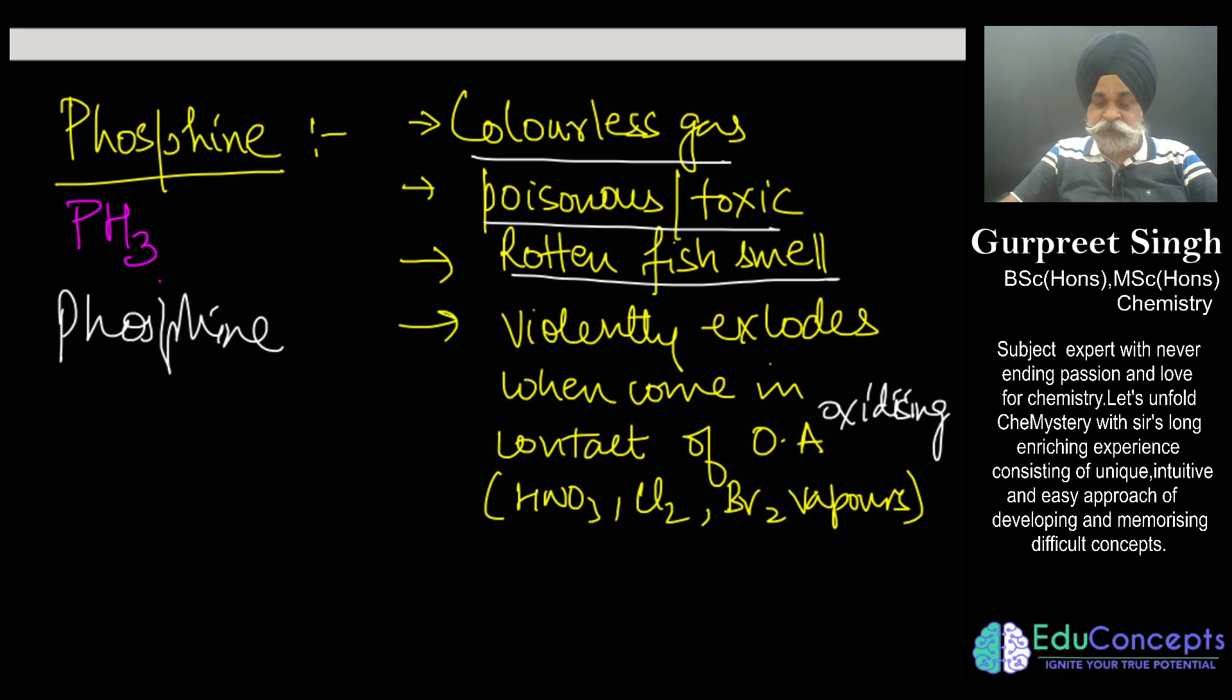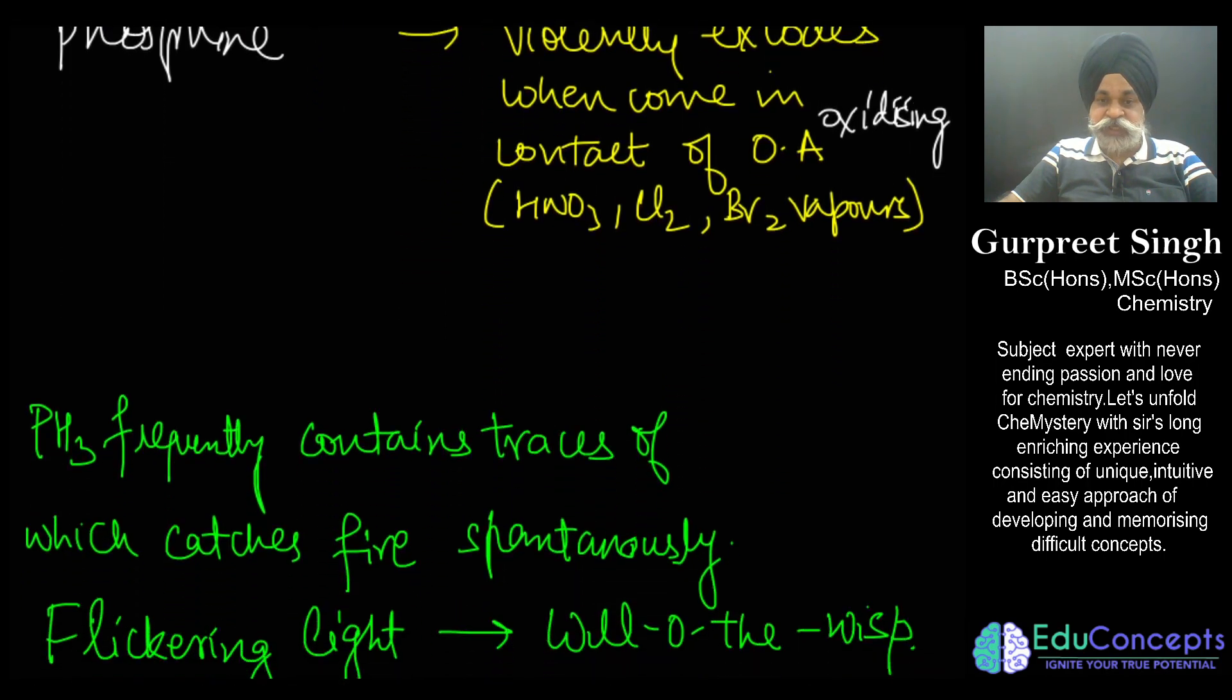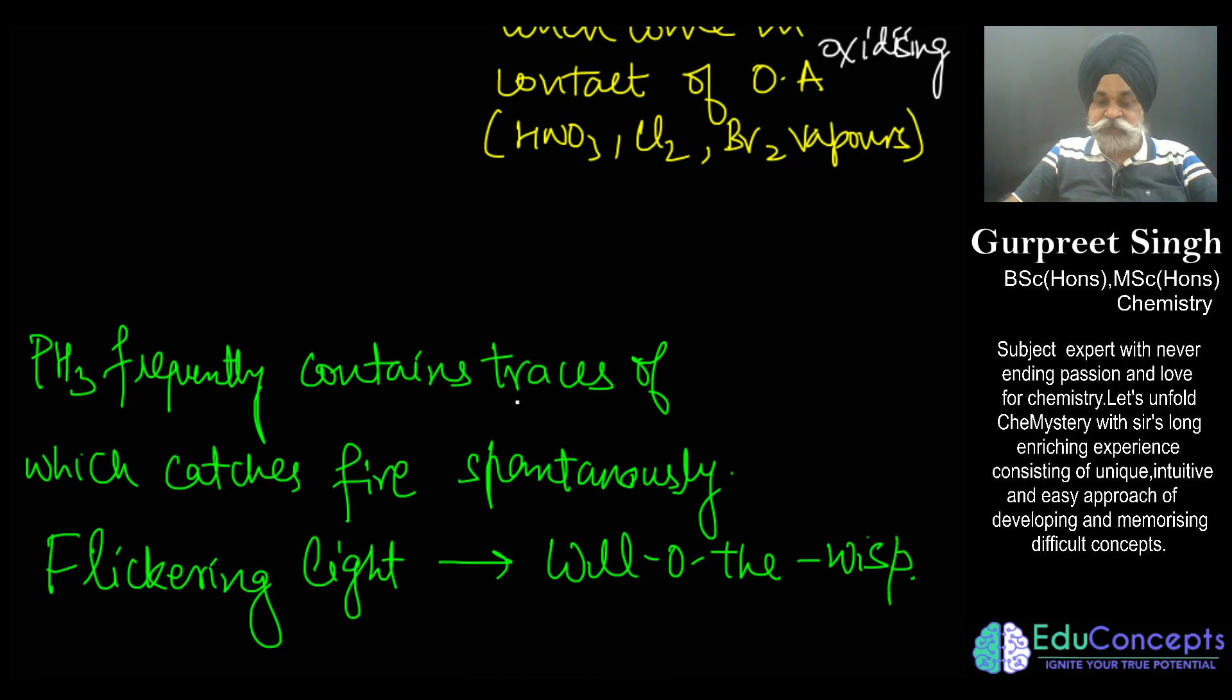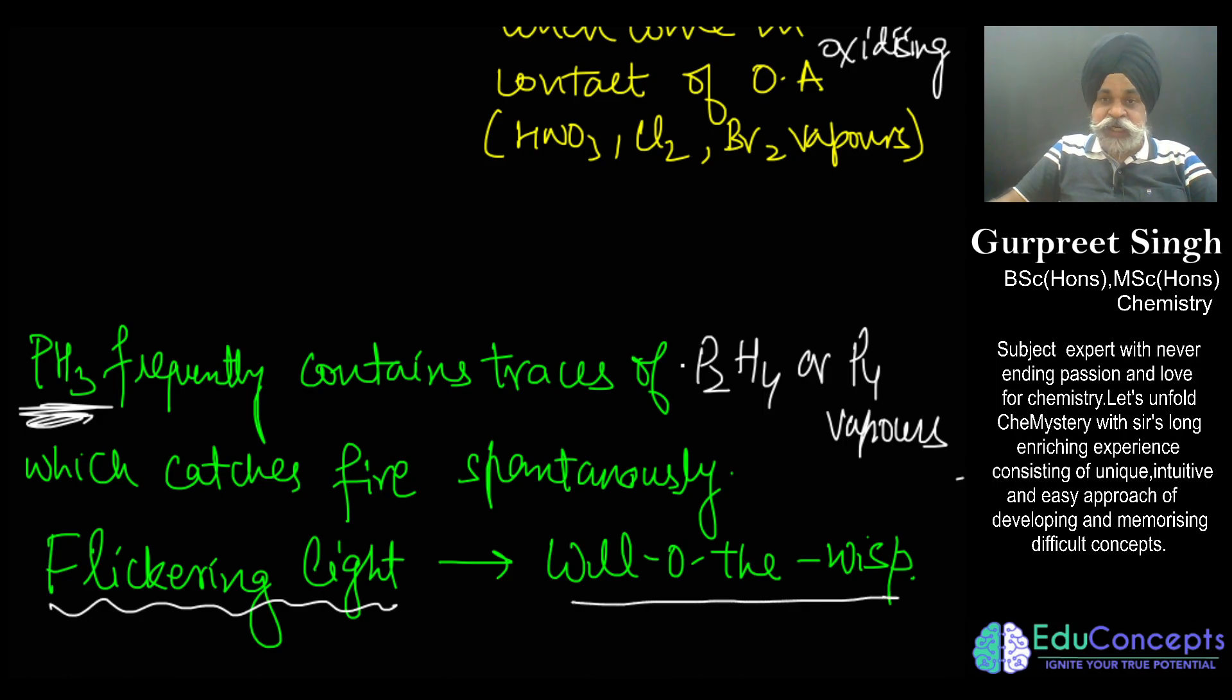The other part of phosphine is that it has a unique property that when it is exposed in air, it can spontaneously catch fire due to the presence of some impurities of P₂H₄, or at times it also would contain some vapors of phosphorus. This phosphine catches fire because of that fact, and this flickering light which is being produced is called will-o'-the-wisp.